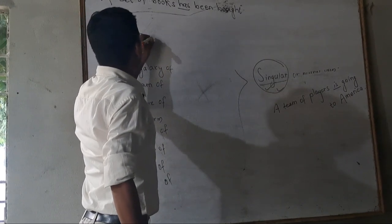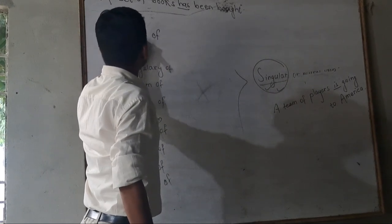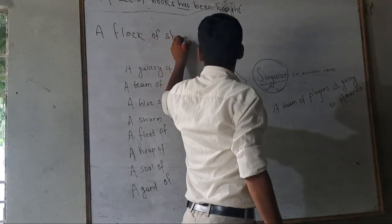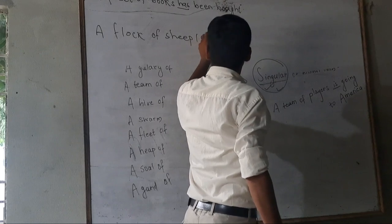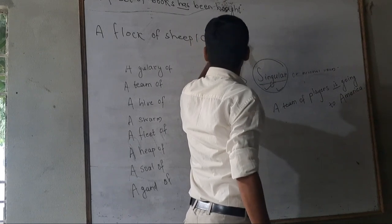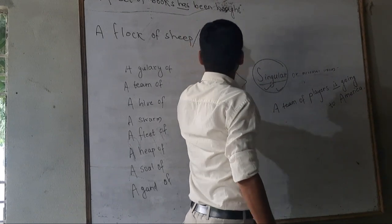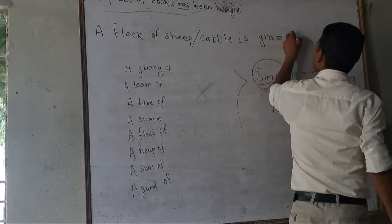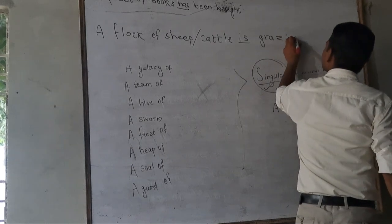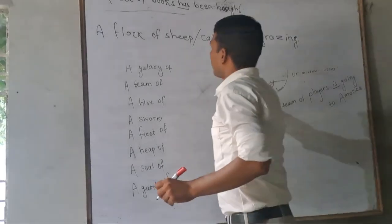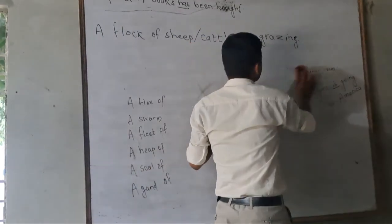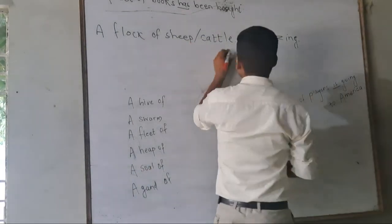A flock of sheep or cattle is grazing. A flock of sheep or cattle is grazing.